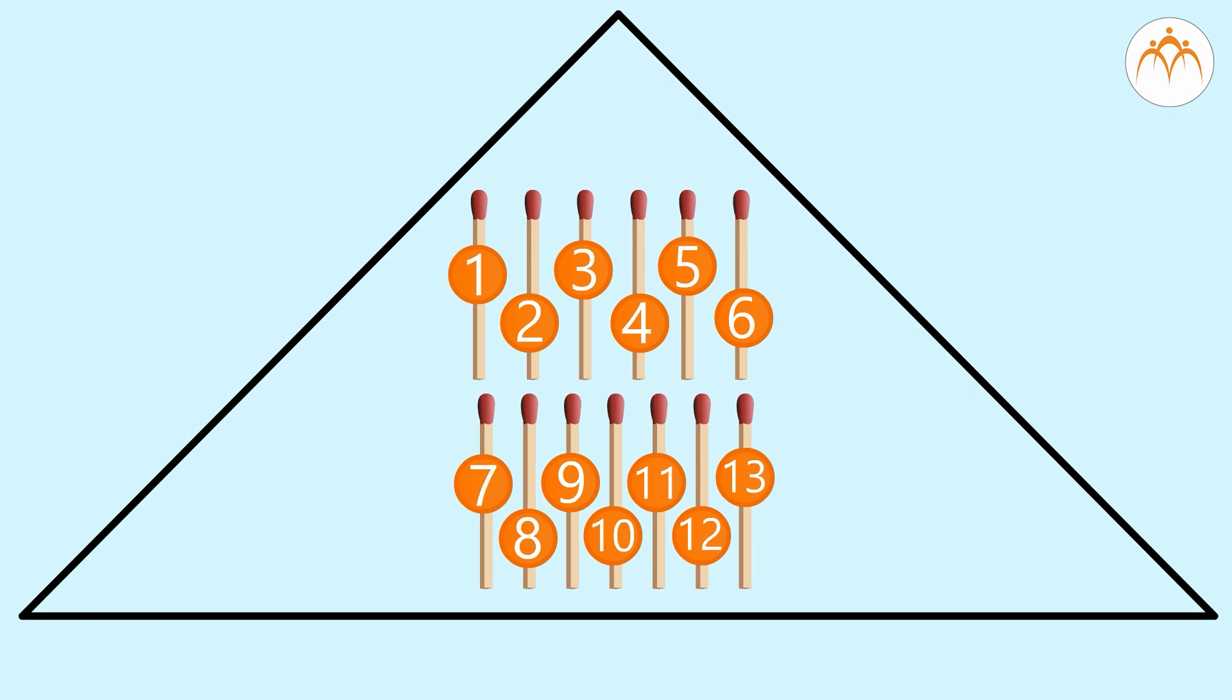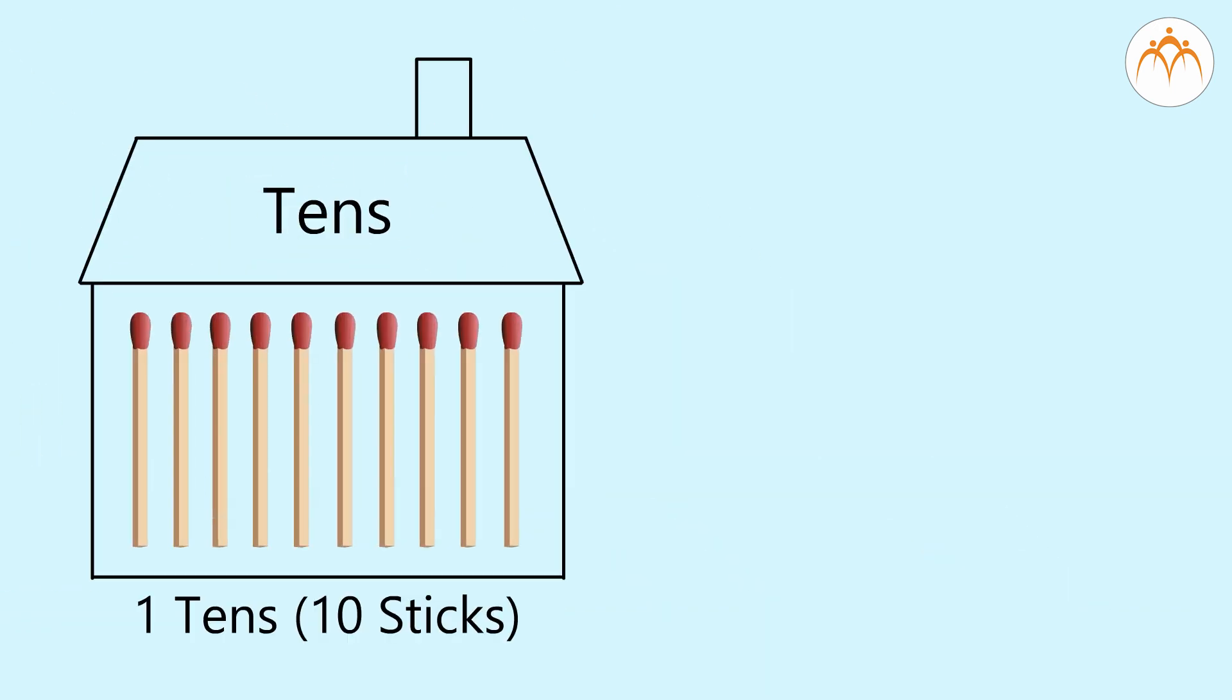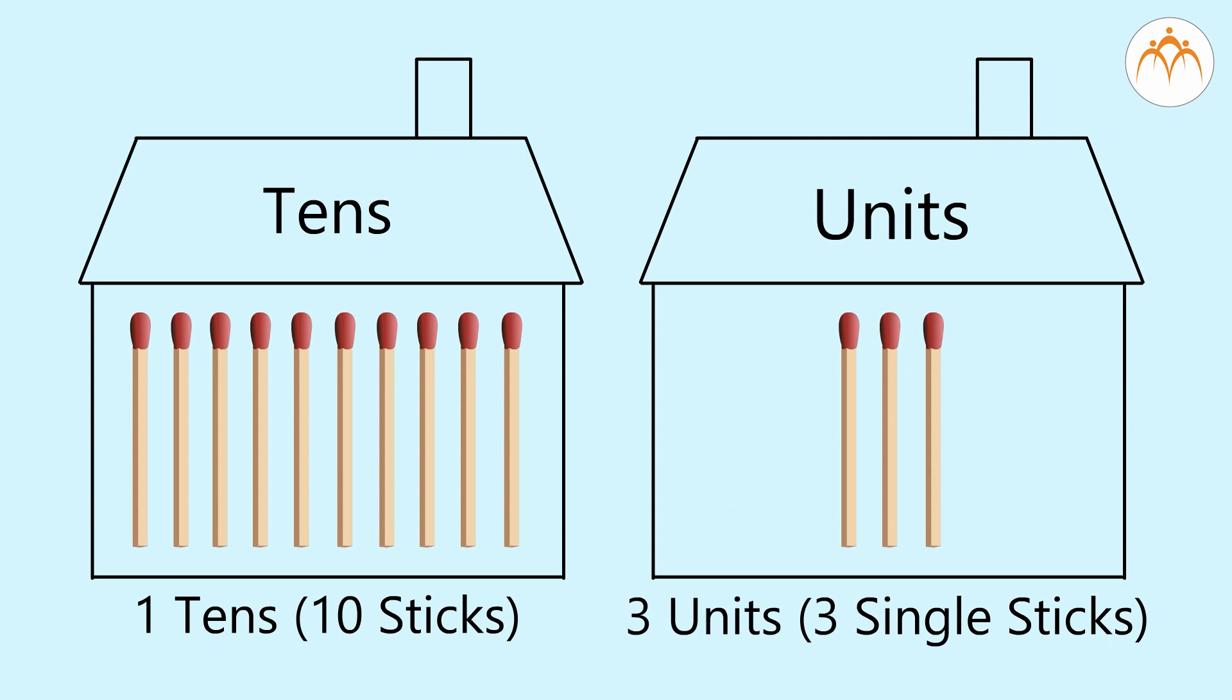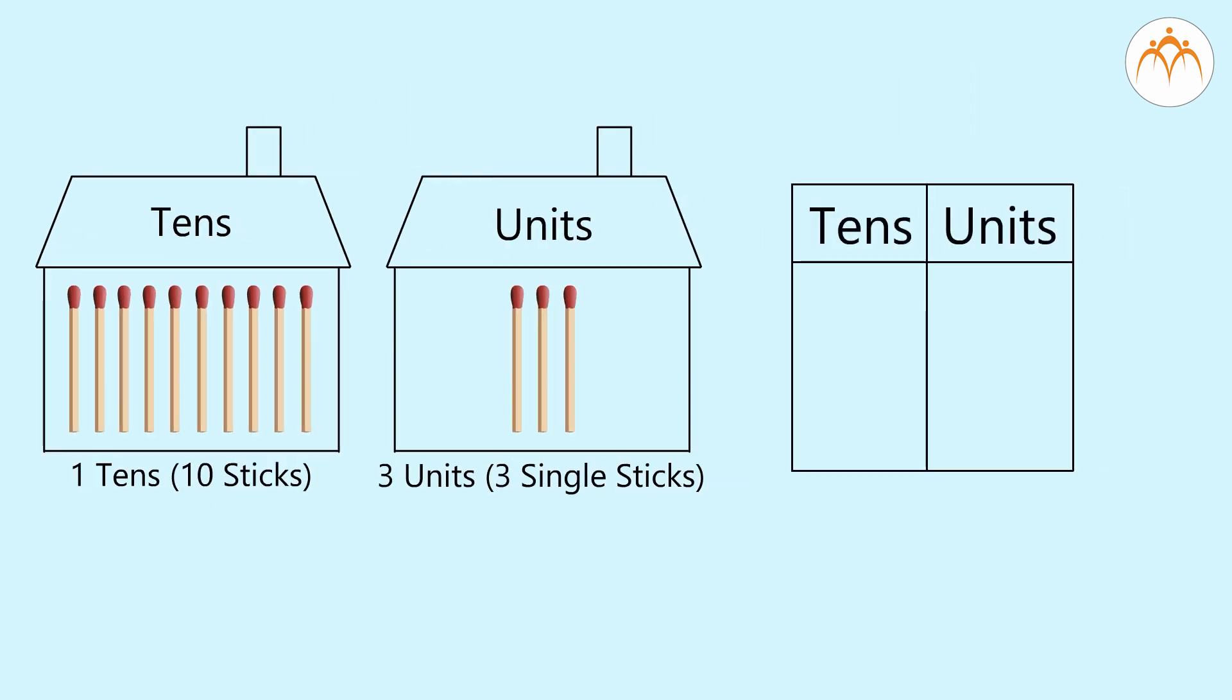In tens, we write the number which is in completed tens and the remaining numbers in units. Therefore, we shall prepare a bunch of 10 sticks out of 13 sticks and place it in tens. The remaining 3 sticks are placed in units. A bunch of 1 ten and 3 single sticks make 1 ten and 3 units. We have already learnt to read the numbers. We shall write 13 as 1 ten and 3 units.